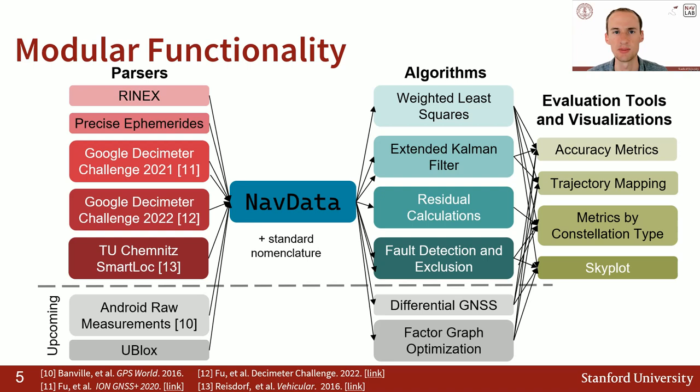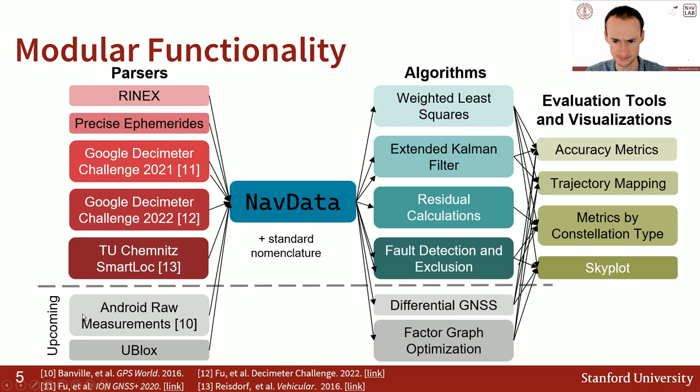Once you have this NavData Python class — which, along with our standard nomenclature, is really the magic ingredient in our library — you can make use of all the algorithms that we already have: weighted least squares, extended Kalman filters, residuals, fault detection. With only a few lines of code, you can run all of these data sources through these algorithms. And then we have a number of evaluation tools and visualization tools available to quickly visualize your data.